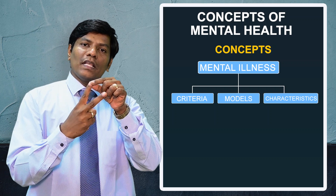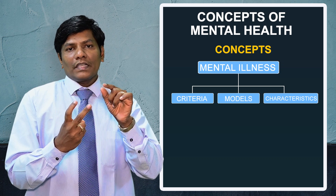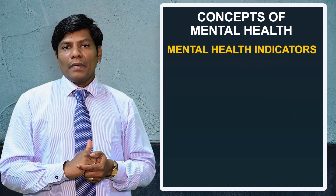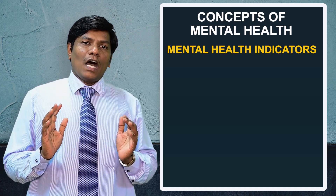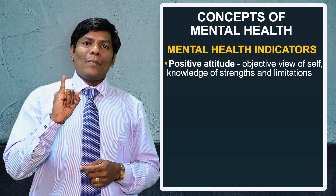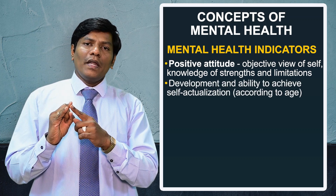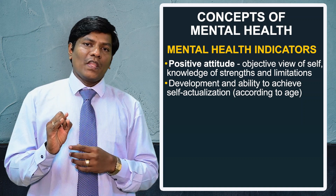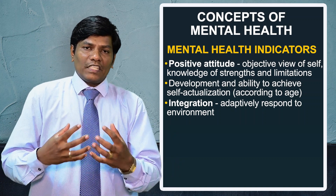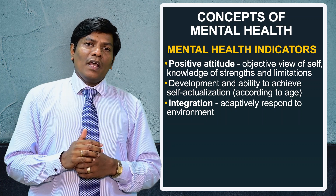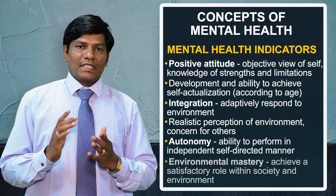The criteria-based approach has two types: one given by Maria Jahoda, and another covering normalcy and abnormalcy criteria. Maria Jahoda (1958) gave six criteria for optimum mental health: (1) positive attitude towards self, (2) growth, development, and achievement of self-actualization according to age, (3) integration, (4) perception of reality, (5) autonomy, and (6) environmental mastery.